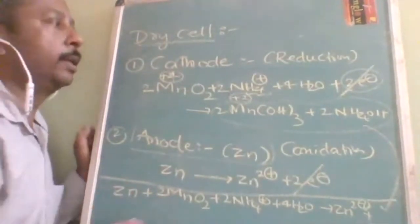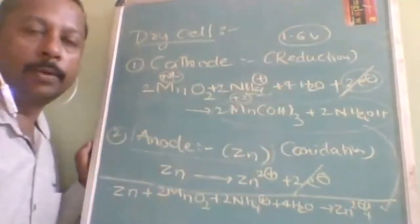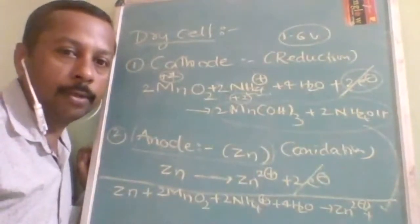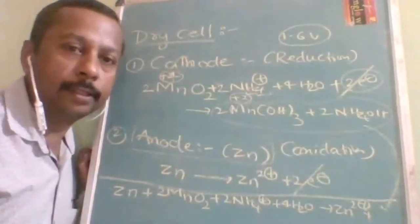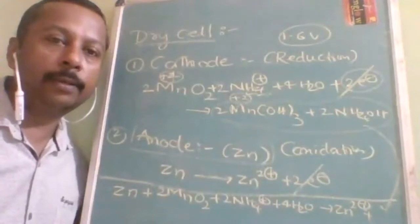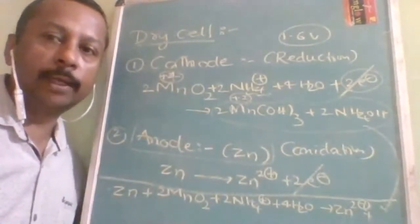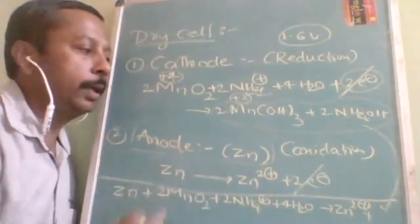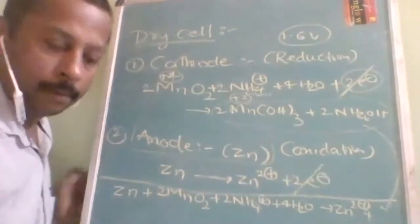The dry cell provides 1.6 volts. The six key points to note for every commercial cell are: what is anode, what is cathode, what is electrolyte, reaction at anode, reaction at cathode, and cell potential. For entrance examinations they can also make integer questions asking the number of electrons lost or gained.